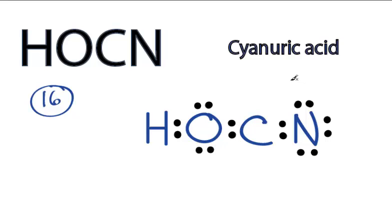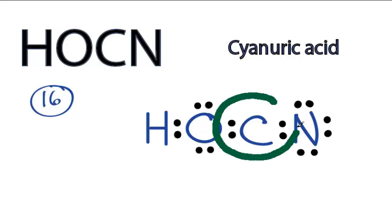At this point, the hydrogen has two, the oxygen and the nitrogen they both have eight, but the carbon here in the center only has four, so we're going to have to share valence electrons.